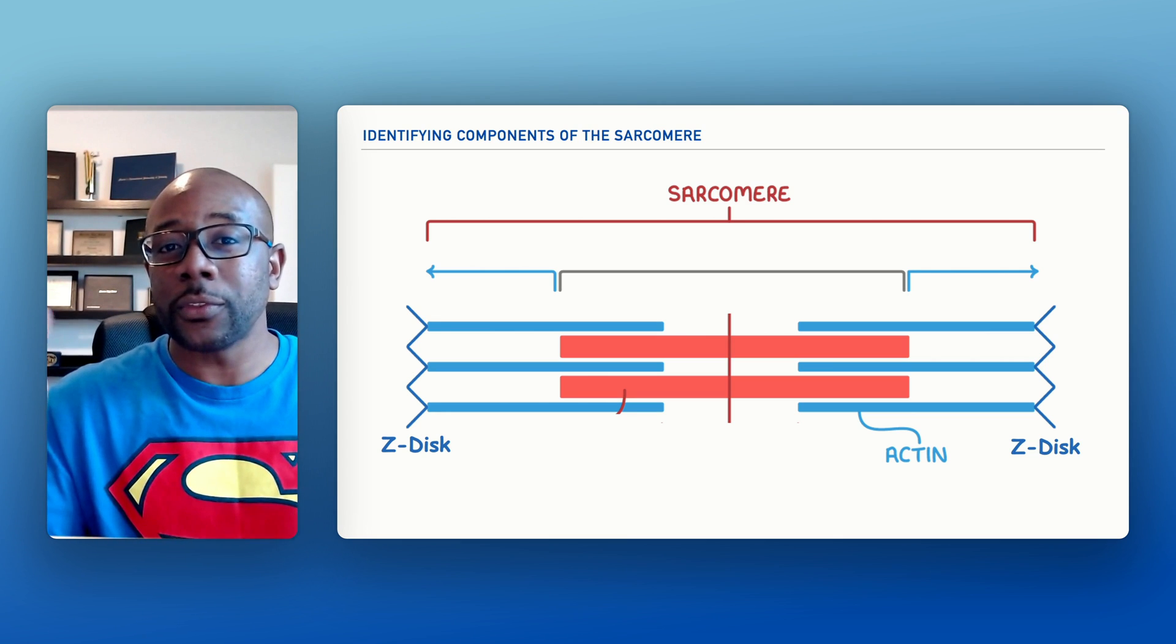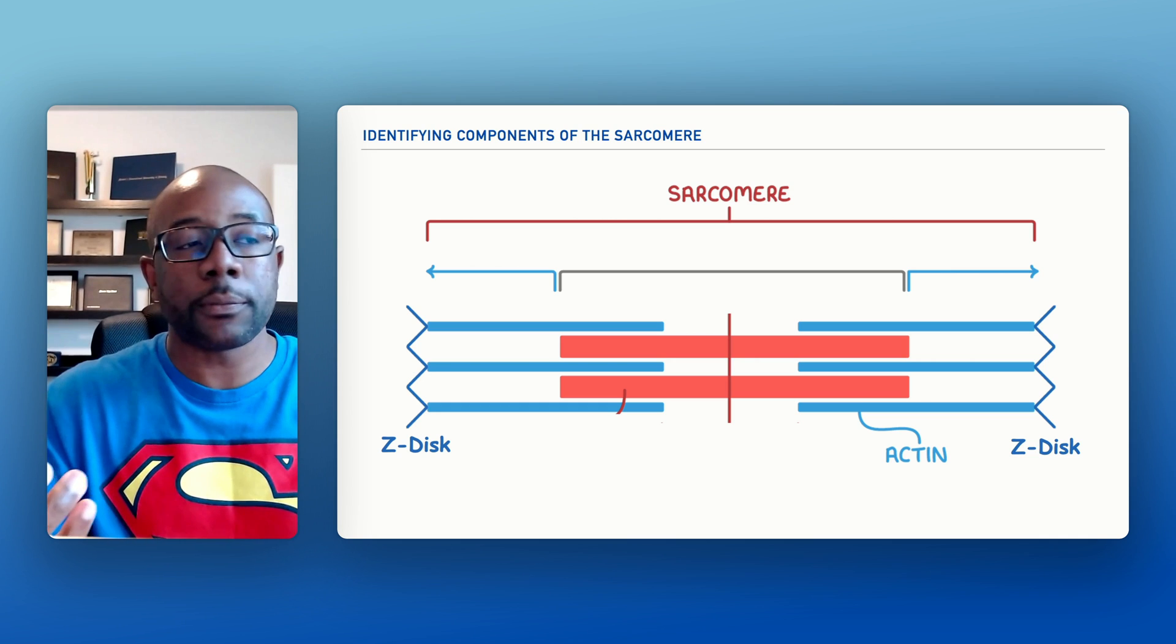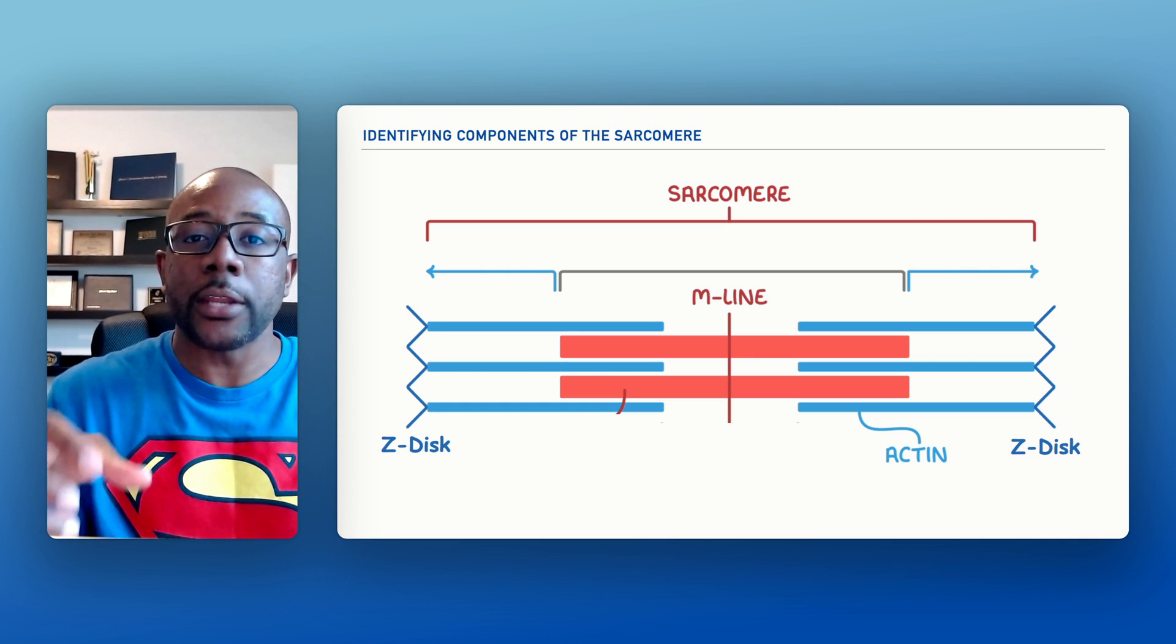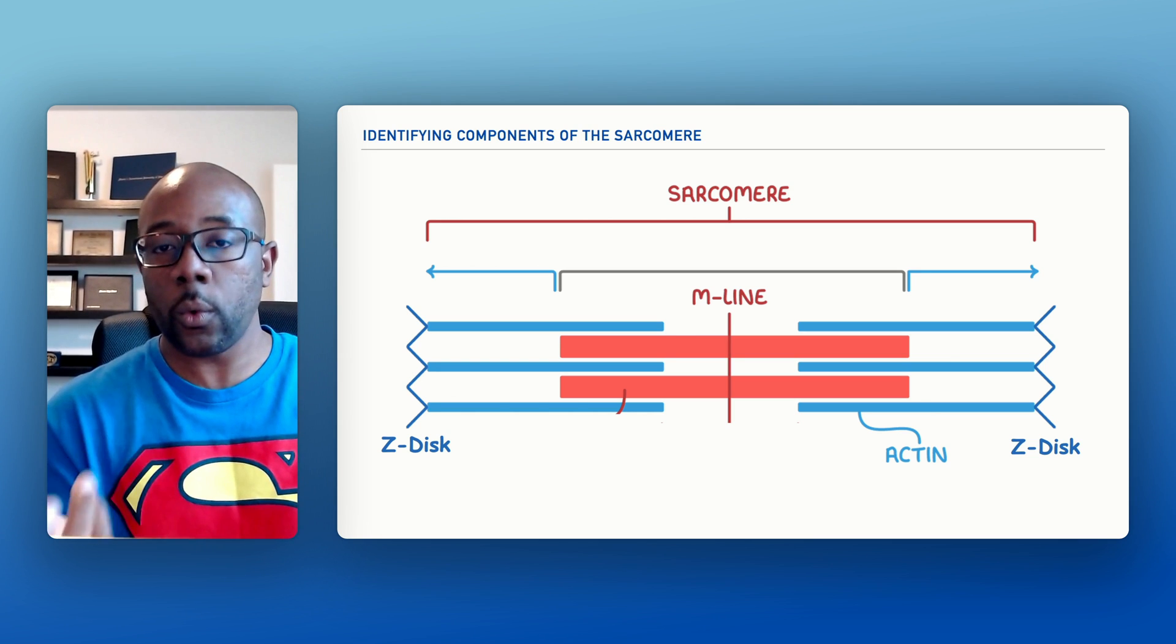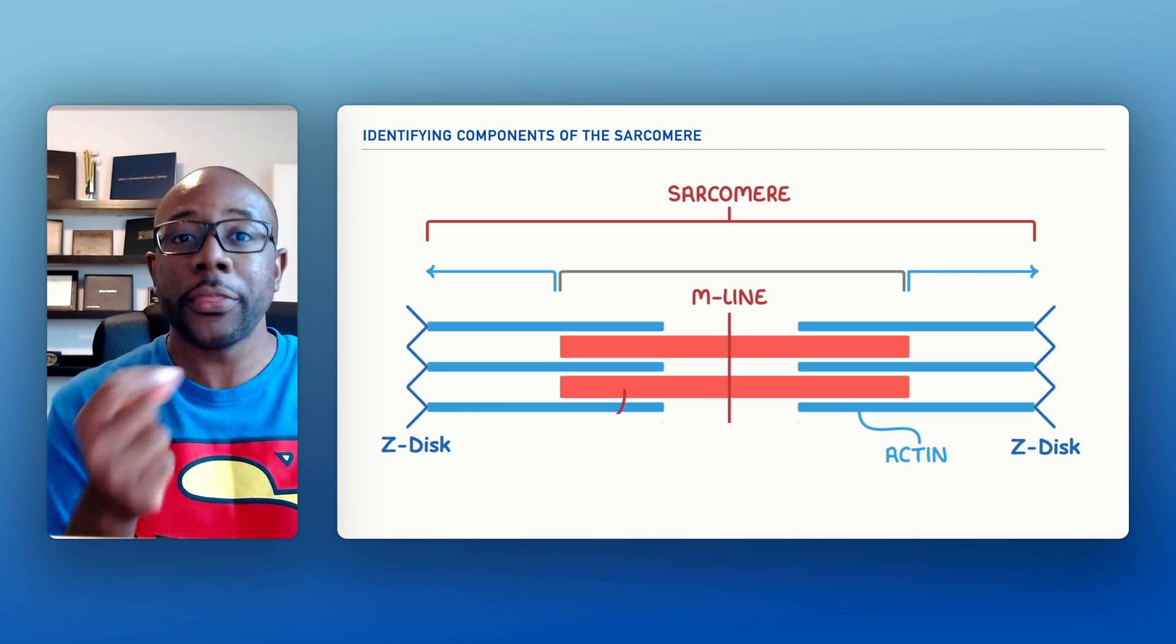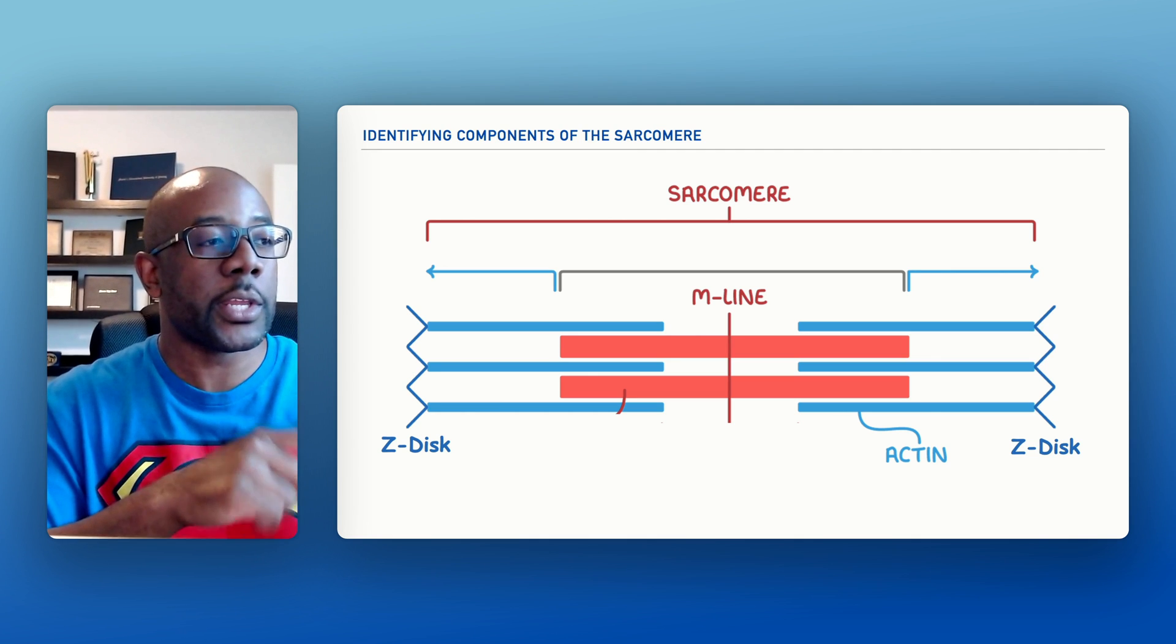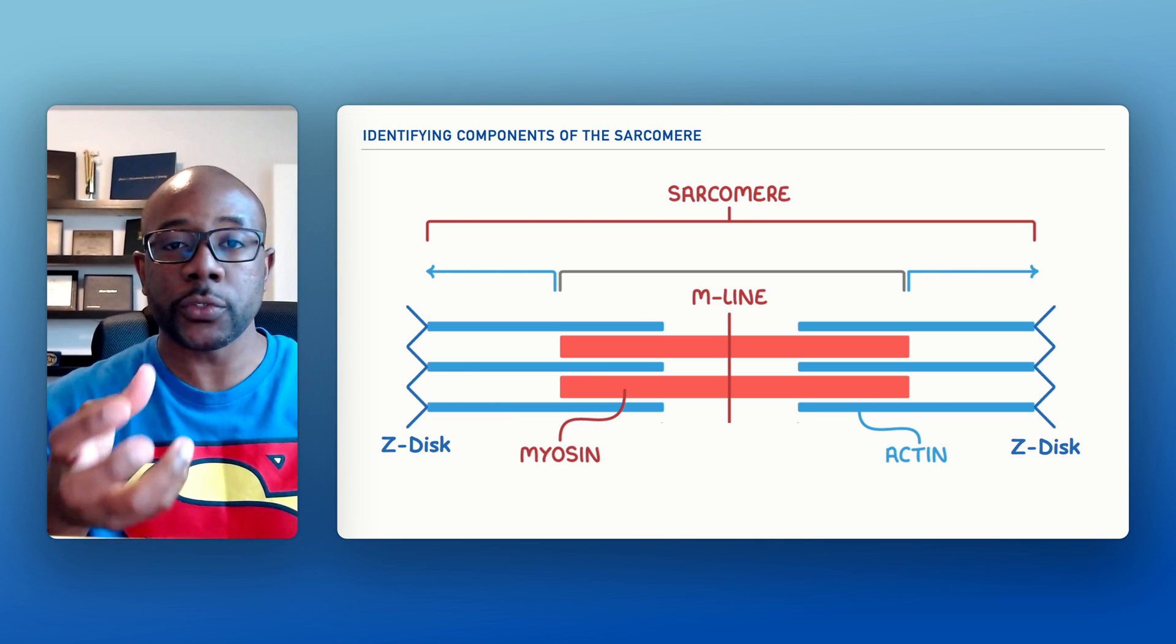Now let's move towards the middle of our sarcomere, and right in the middle you'll see something that we call the M-line. Now the M-line serves as the anchor for what we call myosin or the myosin filament, which is also called the thick filament. Now we'll go ahead and label that on the screen here, and our thick filament are the thick pink structures that you see.